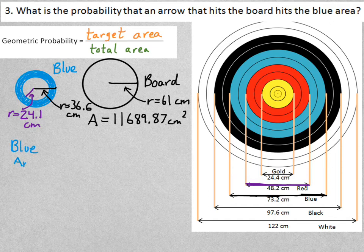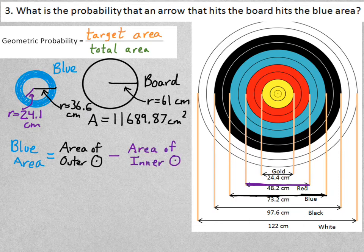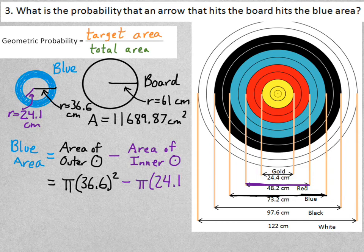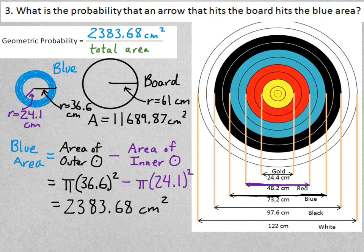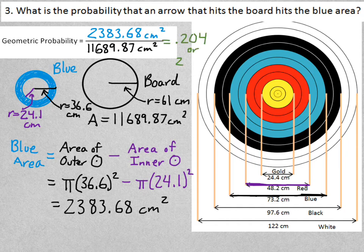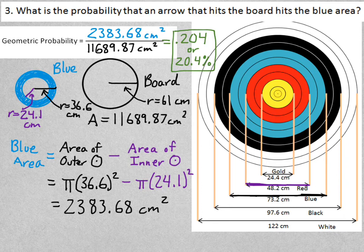So the blue area would be, again, the area of the outer circle minus the area of the inner circle, which would be pi times 36.6 squared minus pi times 24.1 squared. This time I'll just type all of it in my calculator at once, and I get 2383.68. That's the area of the blue ring. So that's my target area, and my total area is still 11,689. Dividing the two, that gives me .204, I rounded, or 20.4% that he hits the blue ring. Did you get it?